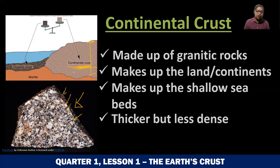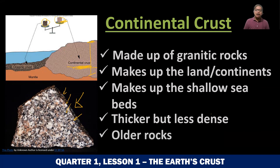So it's lighter than the oceanic crust. If you have the same size of continental crust and oceanic crust — pares lang sila ng size — and you weigh them, they have the same volume but will have different masses. Mas mabigat yung oceanic crust at mas magaan yung continental crust because continental crust is less dense. And finally, yung mga rocks sa continental crust are older. Yung mga luma or matatandang bato, you can see them all in the continental crust.